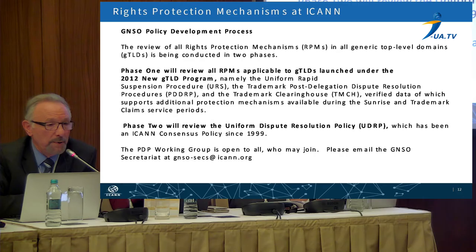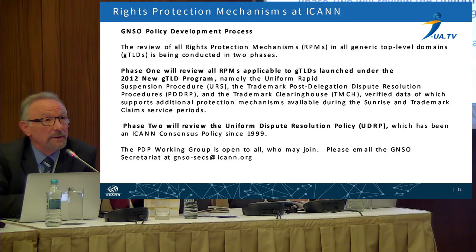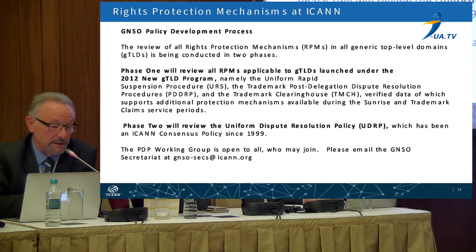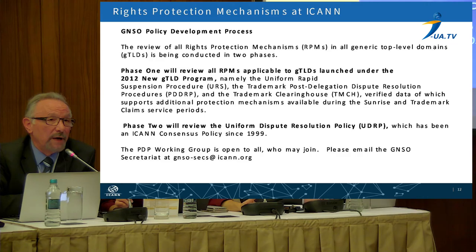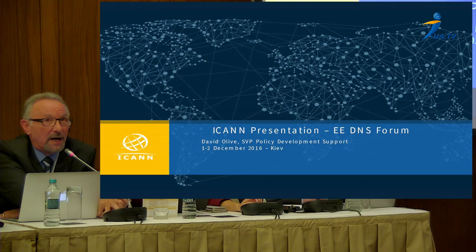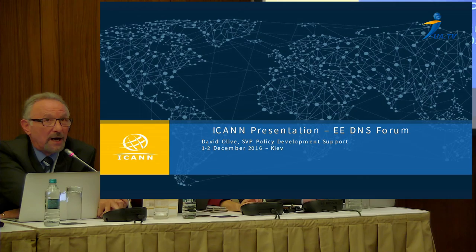To look at the two-part review of rights protection mechanisms: one is looking at the new GTLD procedures and how effective they are and whether they are working as hoped. The second phase is to look at the earlier 1999 UDRP policy and again ask the question — is it effective and is it what we need for today's world? That's the general notion of how policy is made at ICANN, how it has changed and altered for current situations, and in particular the focus on rights protection mechanisms — the intellectual rights protection for the domain names. Thank you.